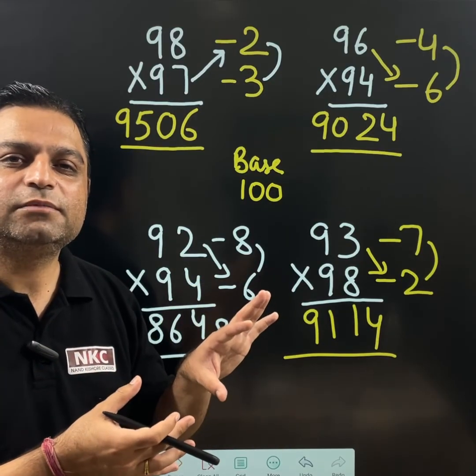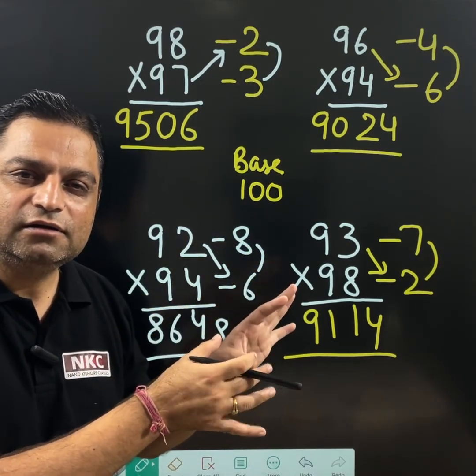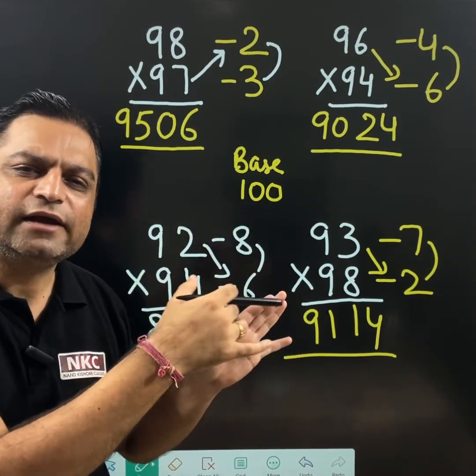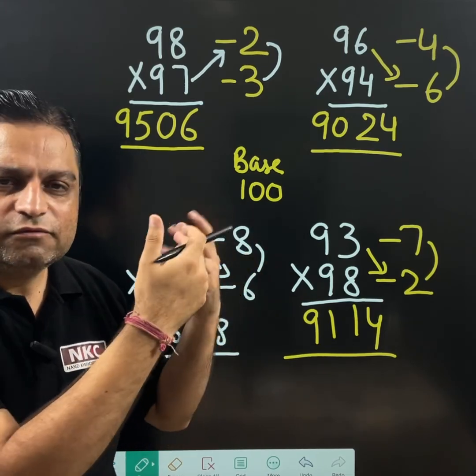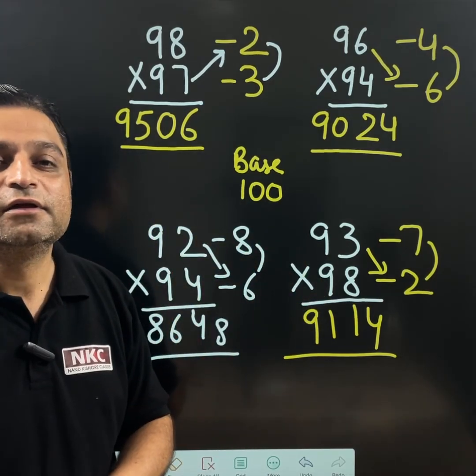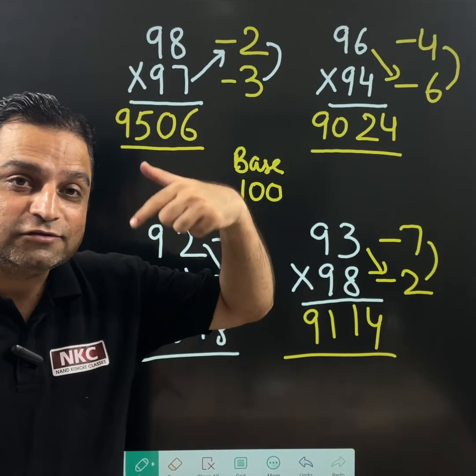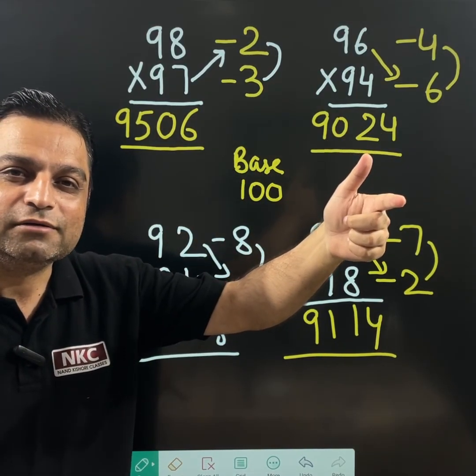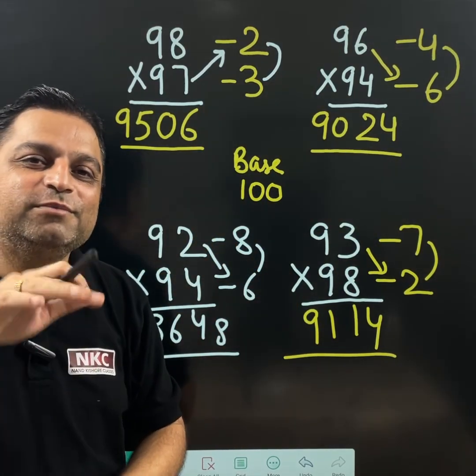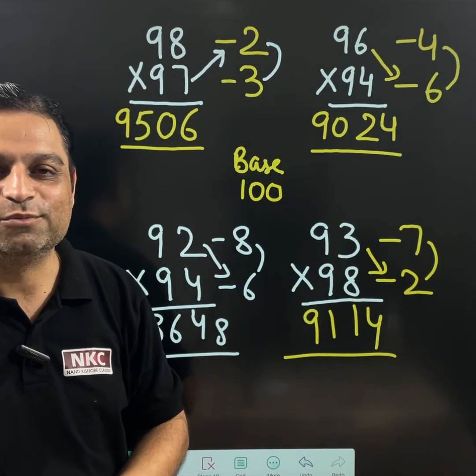That is how we do the multiplication by taking base 100 for the lower values. Means 91, 92, all the values related to 90s. And definitely few are going to ask me, sir, if it is going to be more than 100 then what will happen. So please keep watching the videos. We will be covering in the next video. Thank you so much.